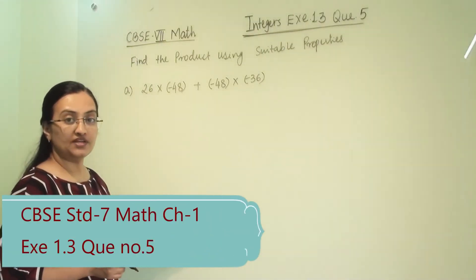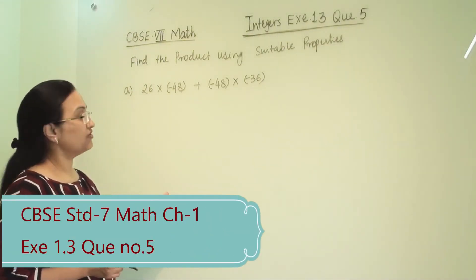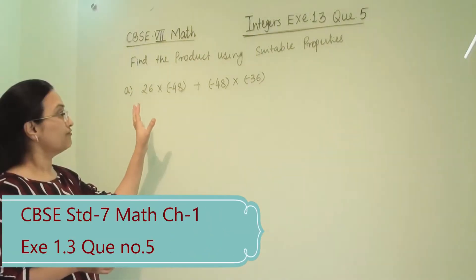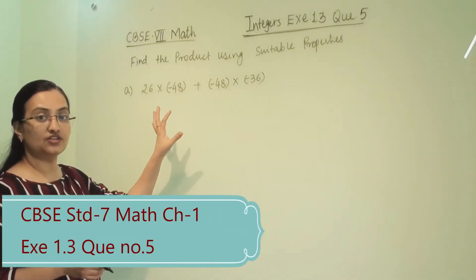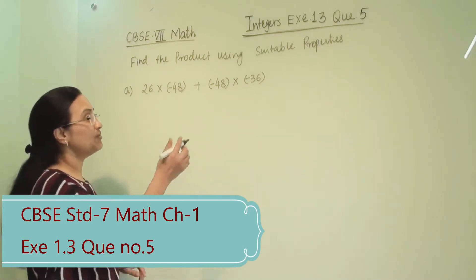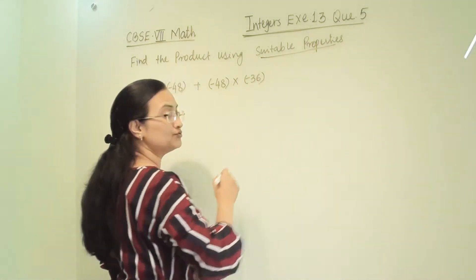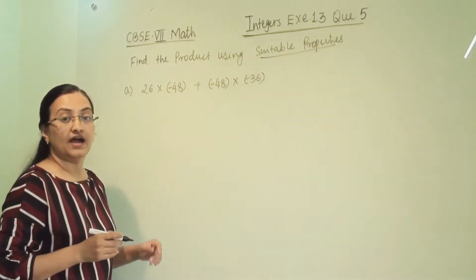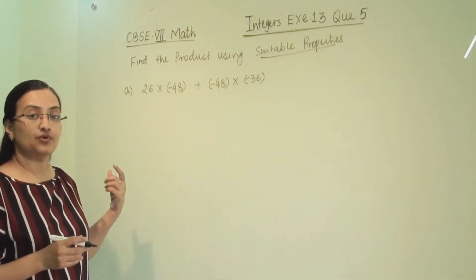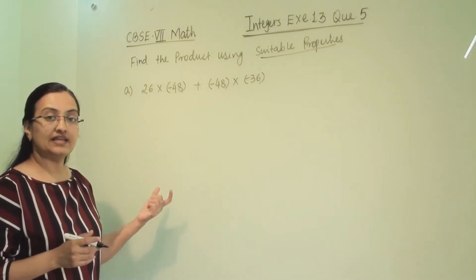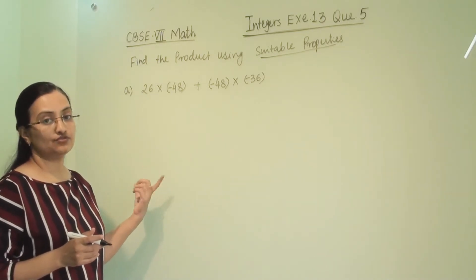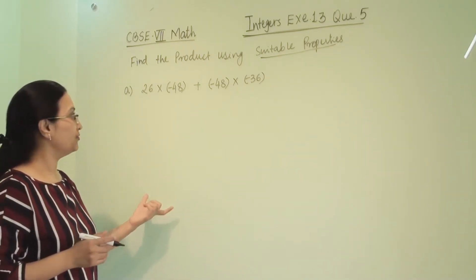Exercise 1.3, question number 5. Find the product using suitable properties. Here we have to identify the property as well and solve each numerical.